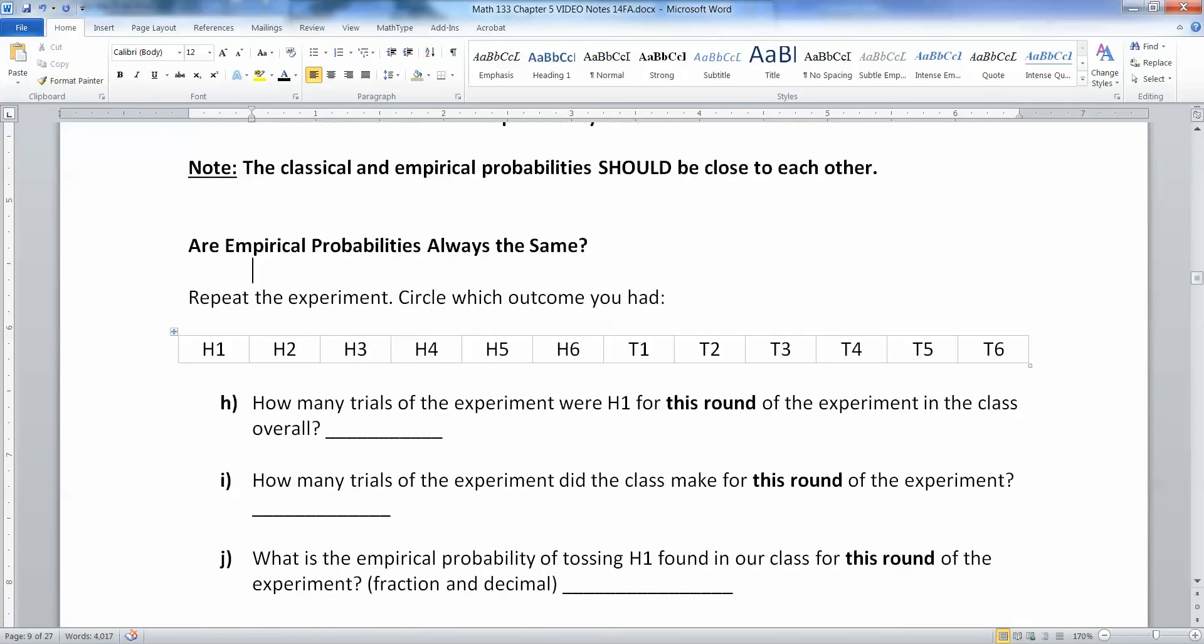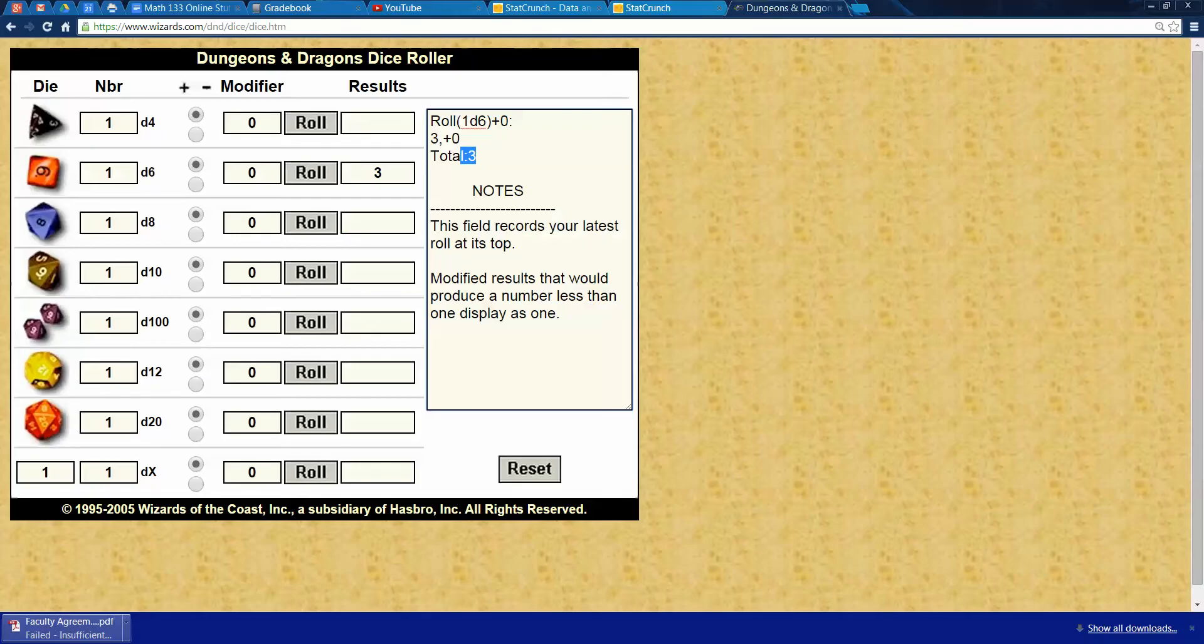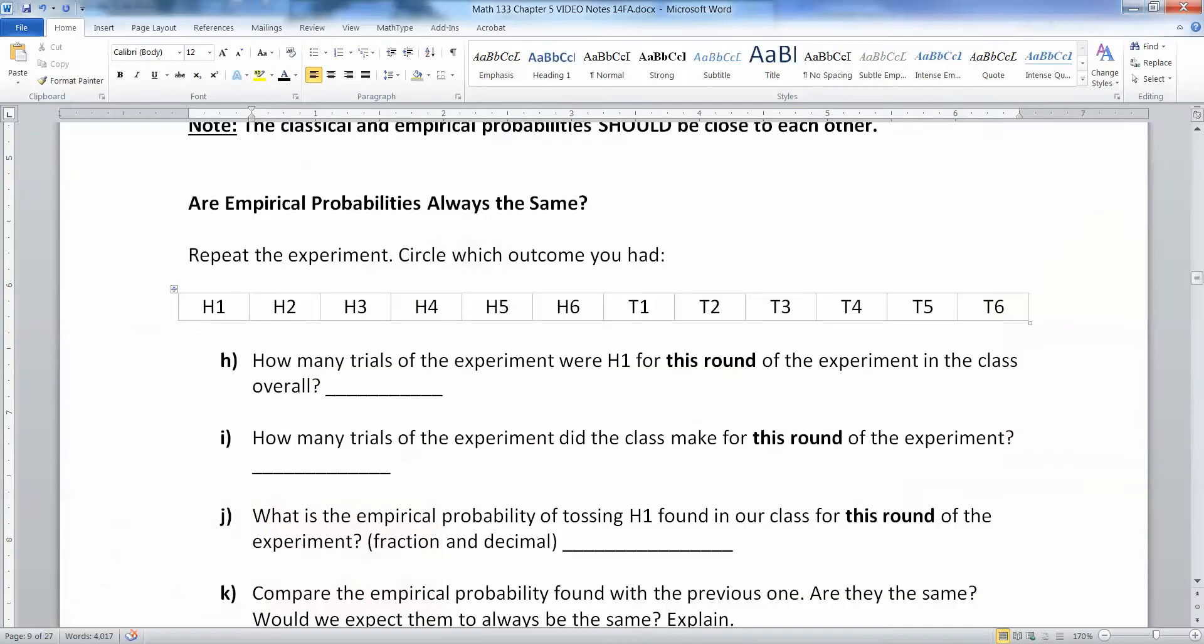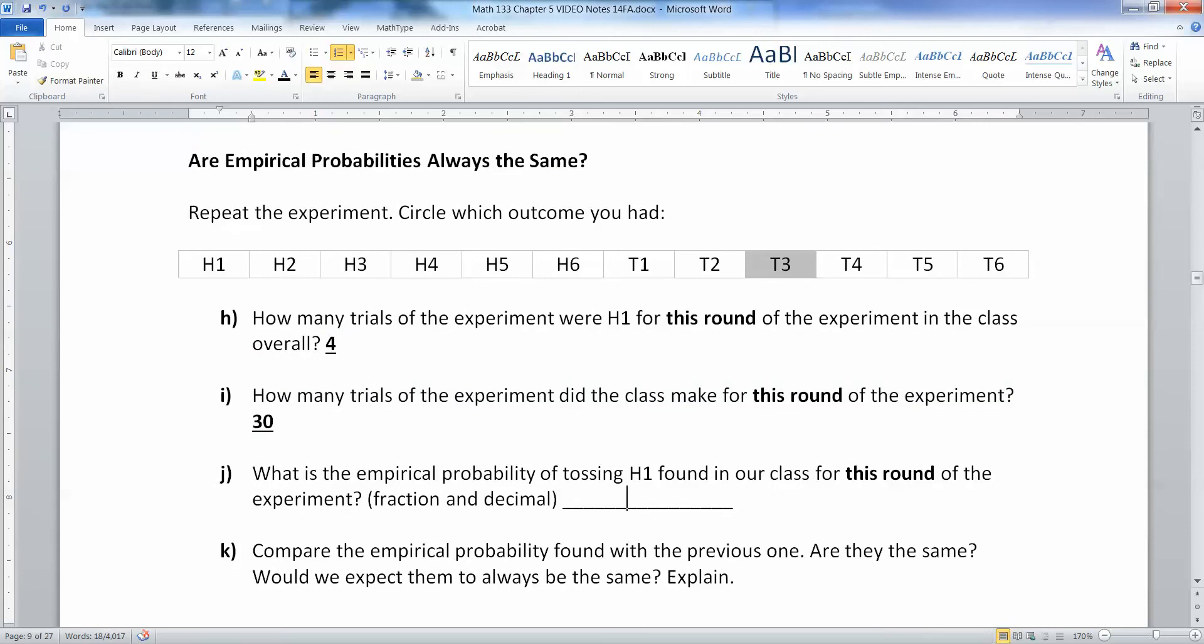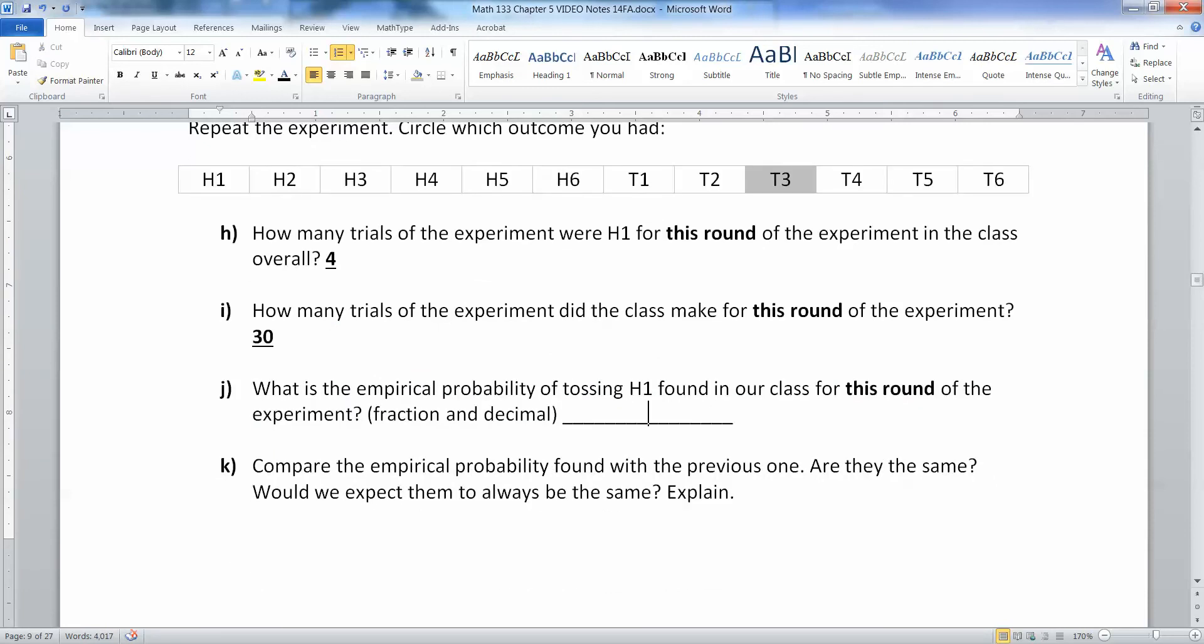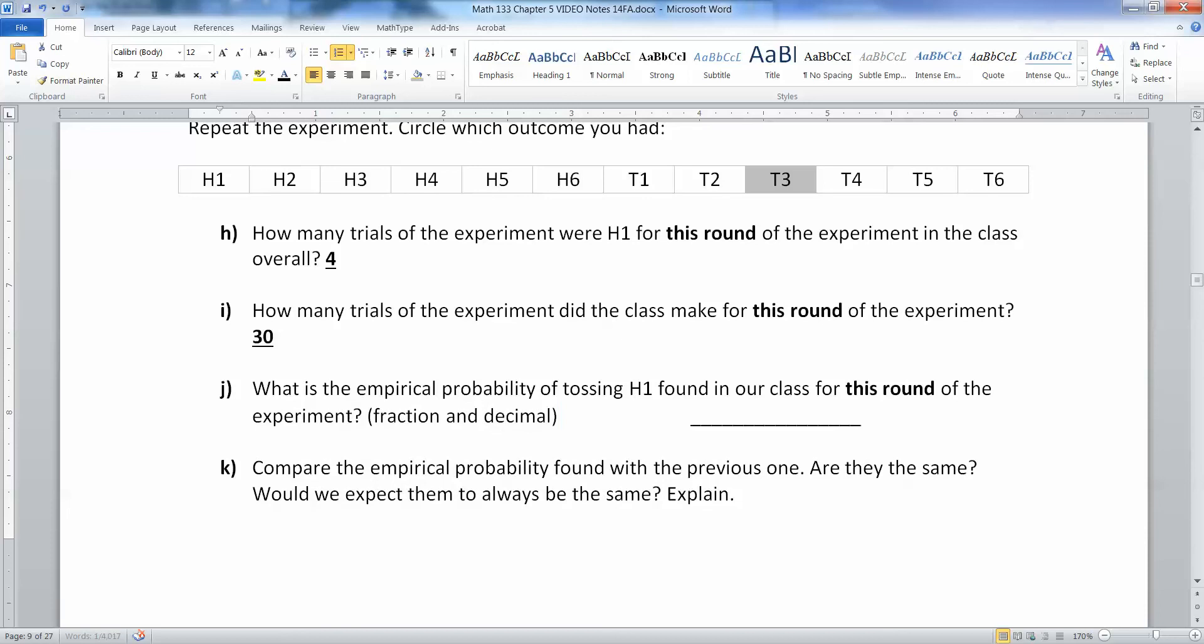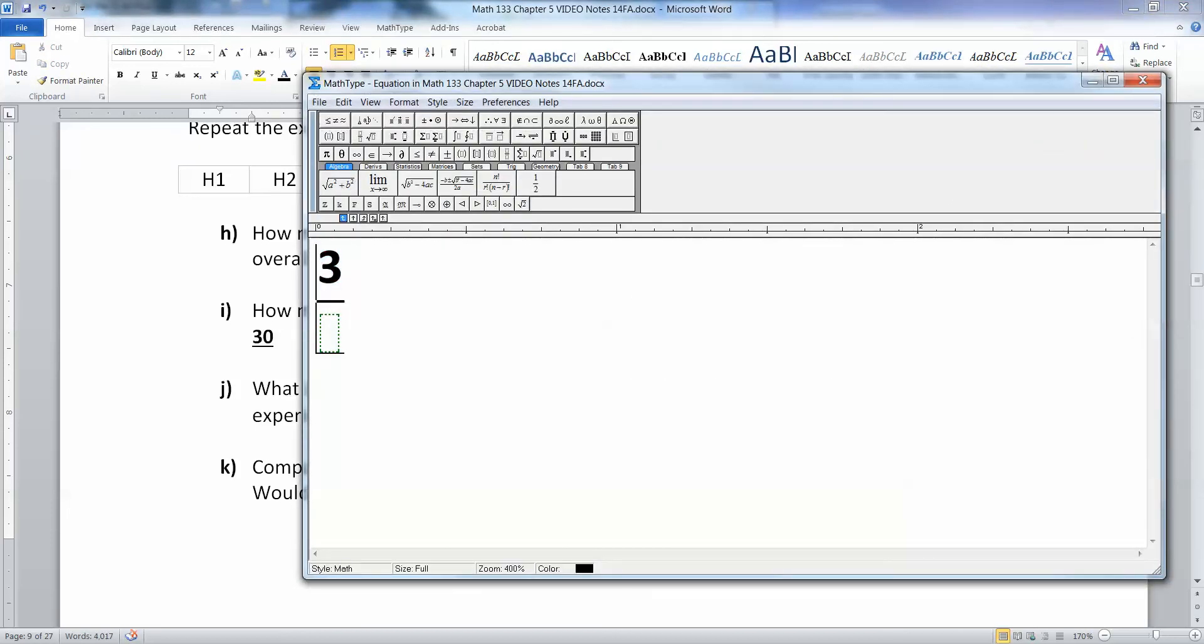So I'm going to repeat this. So you do it again. This time I got tails. Then I'm going to go toss a die. I got a 3 again. So I got T3 right here. You do it yourself and record what you get. Now, how many times did we do this? Well, we did 30 again. Pretend we're still in that room full of 30 people. And then how many of them get it this time? Let's pretend 4 of them got it. Well, then what's the empirical rule of tossing H1 for this round of the experiment? Well, that would be 4 out of 30, which would be 0.13 repeating.